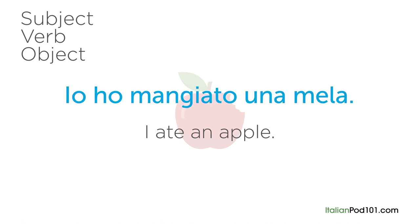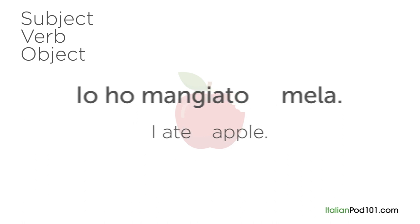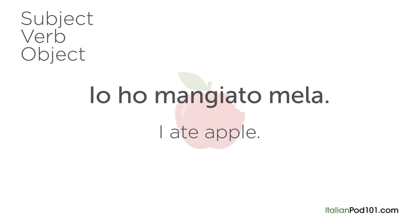Io ho mangiato una mela. If we break down the Italian sentence, we get the subject 'io,' meaning I, then comes the verb 'ho mangiato,' meaning ate, and finally we have the object 'mela,' meaning apple. The basic word order for Italian is SVO — the same as English. This means you can convert an English sentence into Italian simply by replacing the English words with Italian words and you'll still be understood.